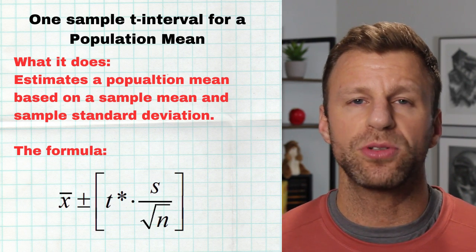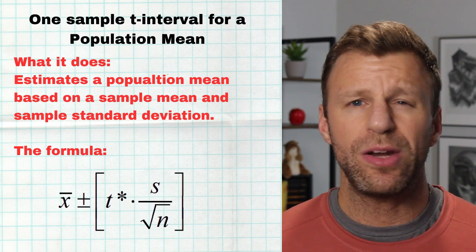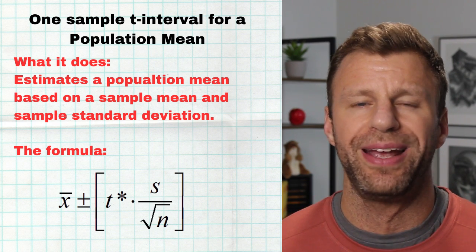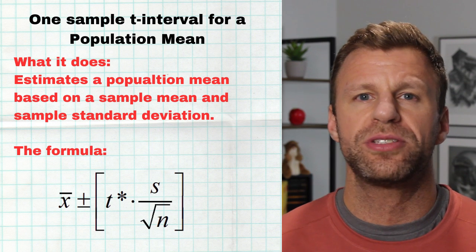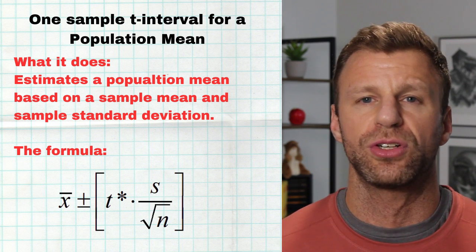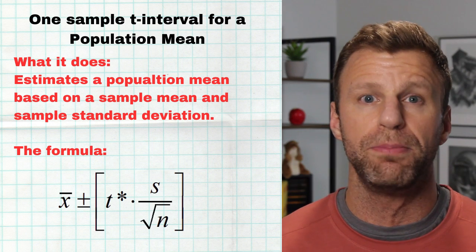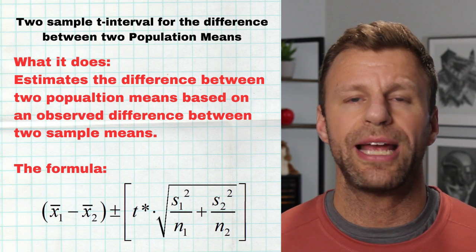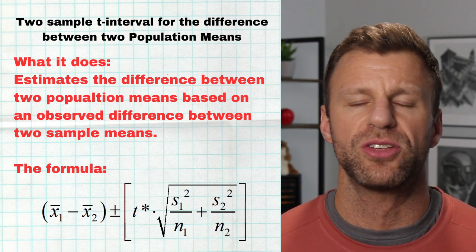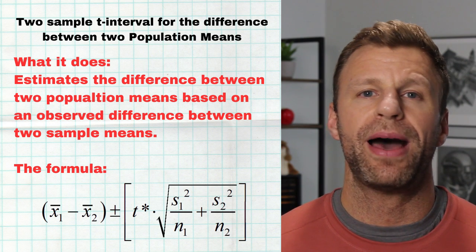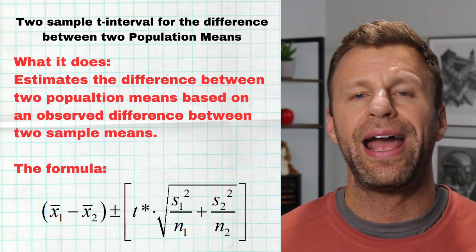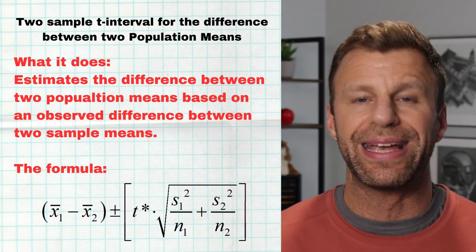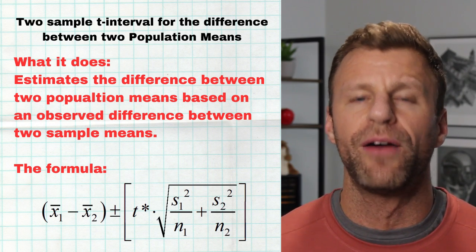Next up, we have a one-sample T interval for a population mean — for example, what is the mean weight of a jelly bean in a huge batch? I can get a sample of jelly beans, get a mean weight, and use that sample mean as a point estimate to build a confidence interval to estimate mu. I could also do a two-sample T interval for the difference between population means — for example, the difference between mean homework time at school A versus school B — by taking a sample from each, getting an observed difference, and building a confidence interval around it.